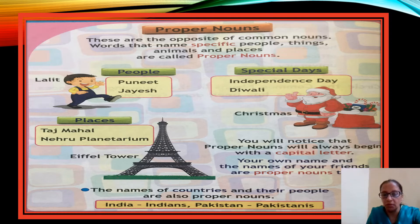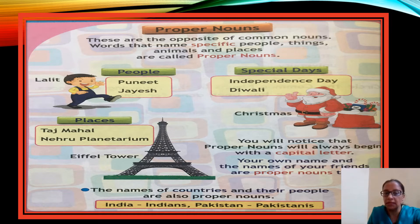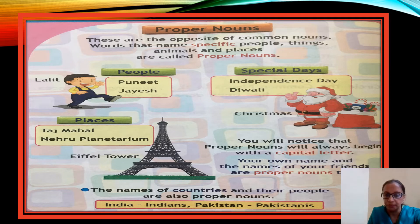Now moving to proper nouns — words that name specific people. Where common nouns are non-specific and not particular to one thing, proper nouns name specific, particular people, things, animals and places.